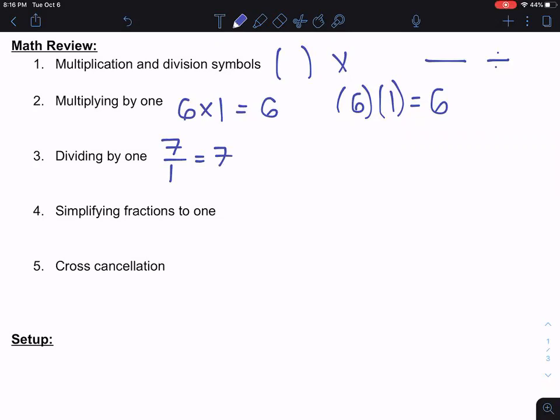Another thing we'll use is simplifying fractions to one. So any number divided by itself is one, right? So nine over nine is one. Could do 123, right? 123 is a pretty big number, but when I divide it by itself, I just get one. So if I had the same thing on the top and the bottom of a fraction bar, it simplifies to one.